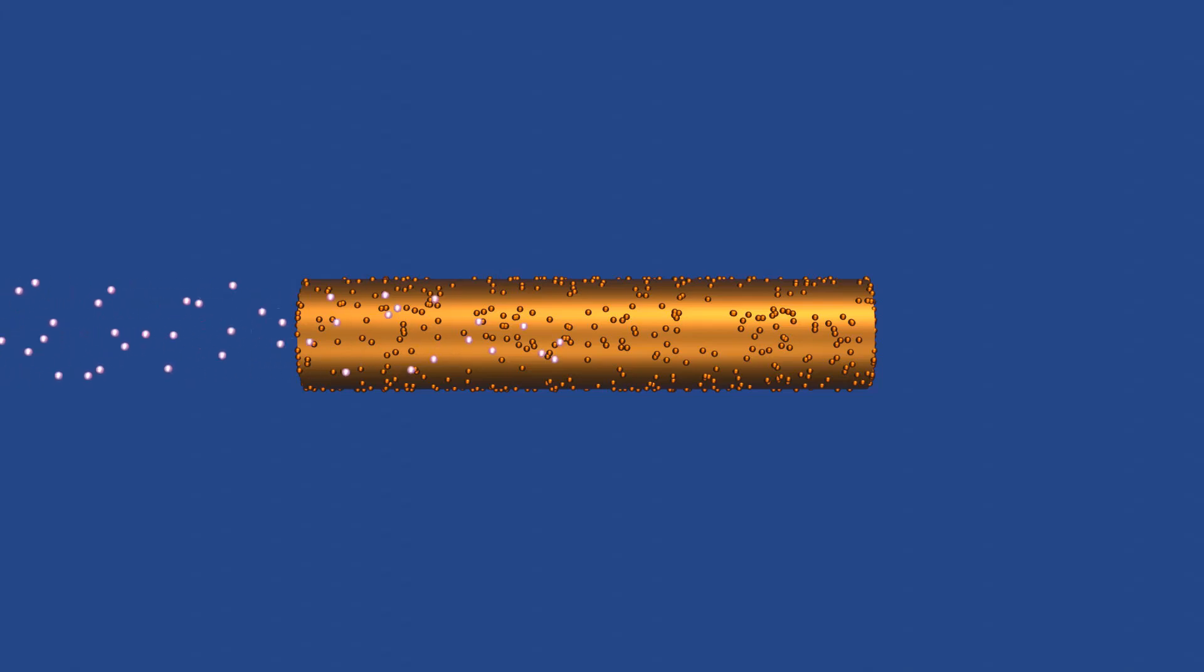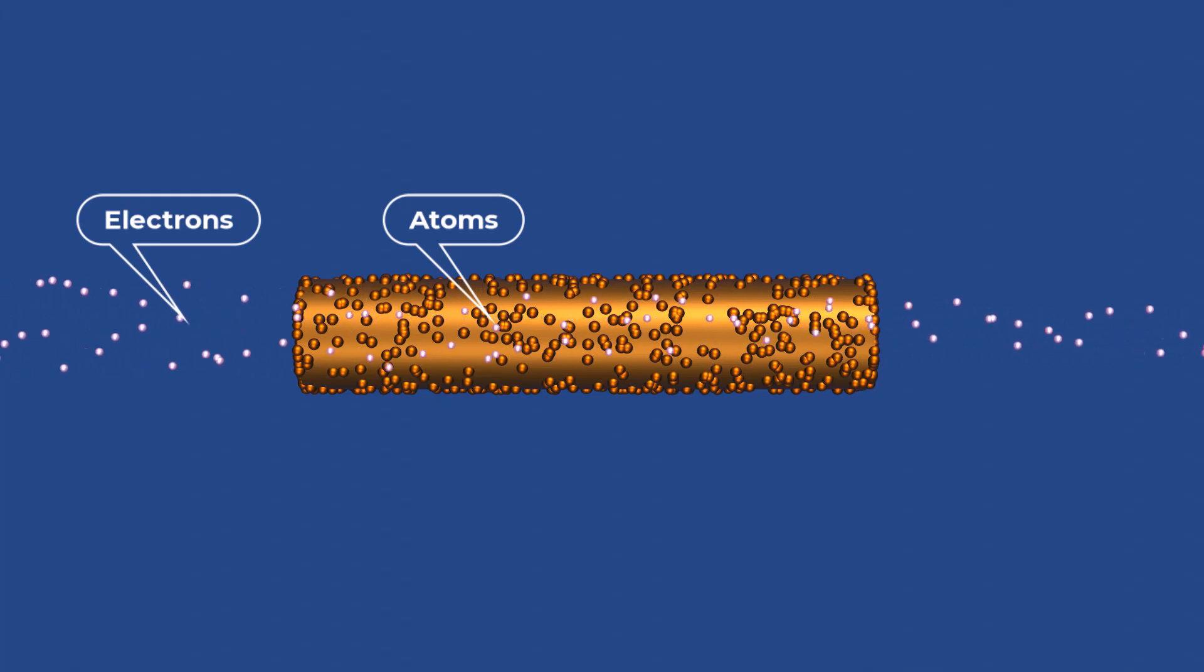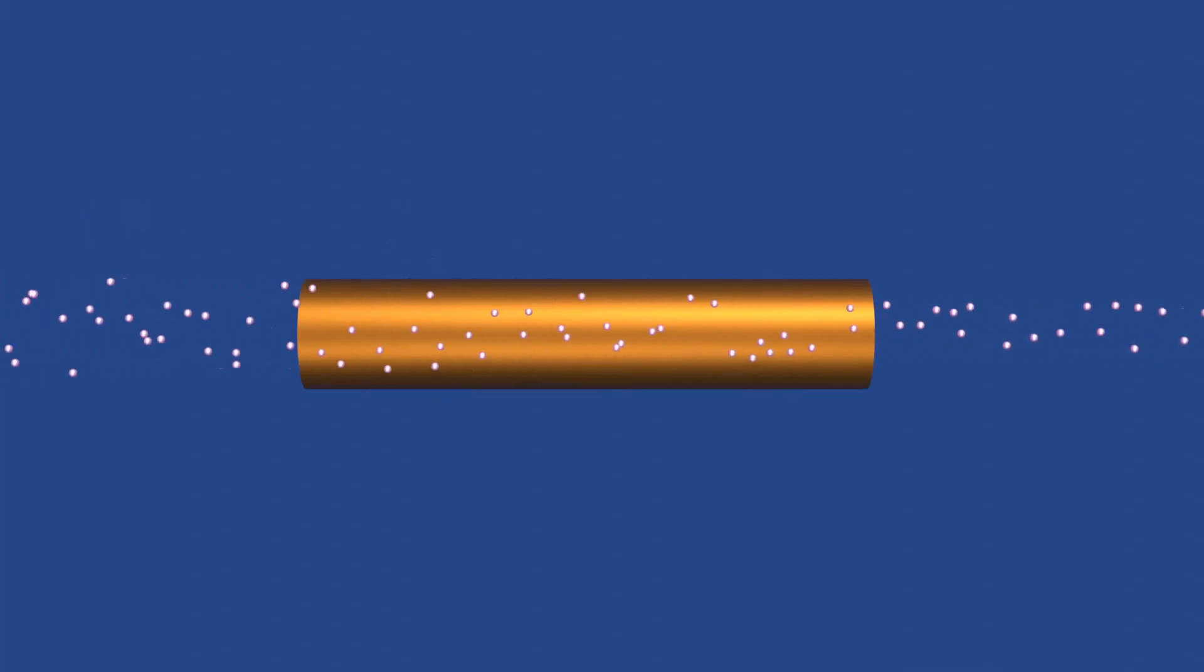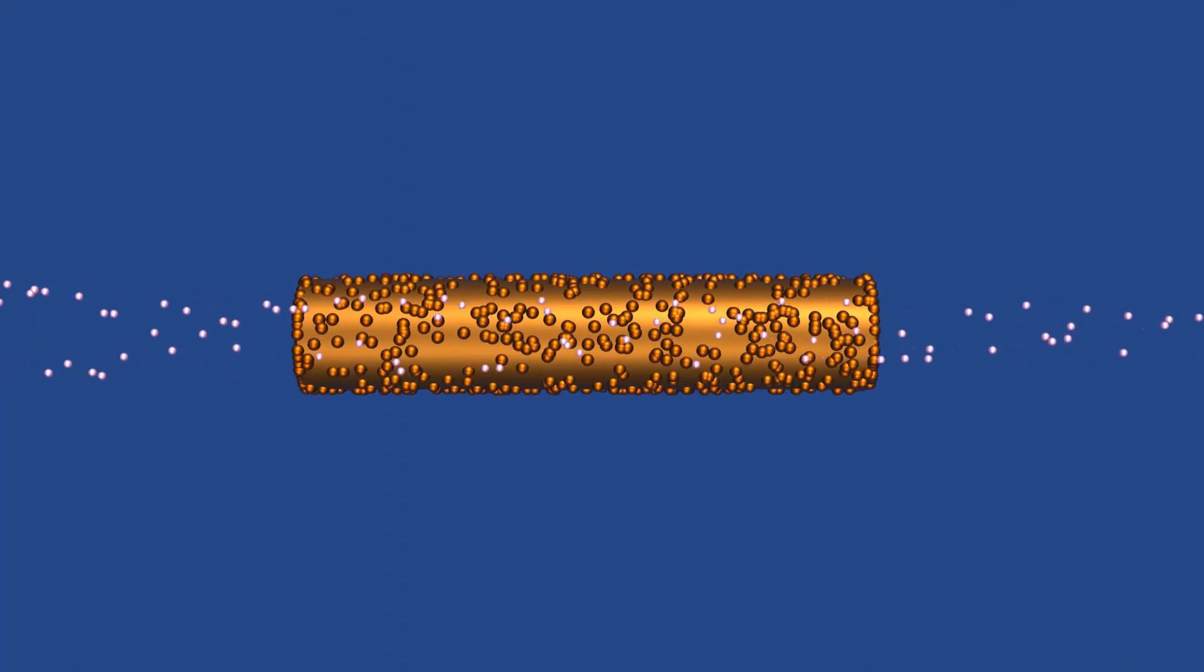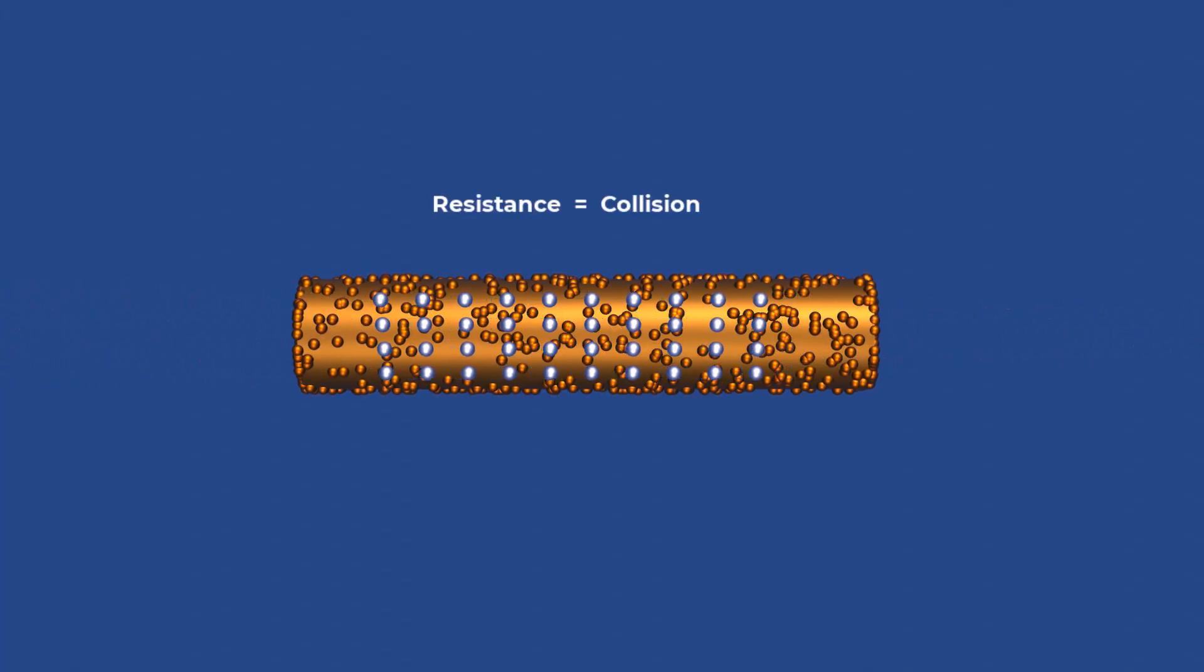On an atomic level, resistance arises from the collisions between electrons and atoms within the material. As electrons move through a conductor, they encounter various obstacles like impurities, defects in the crystal lattice, and the atoms themselves. Each collision causes a loss of energy, contributing to the overall resistance of the material.